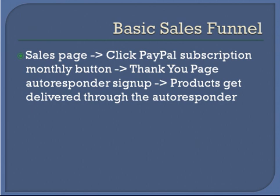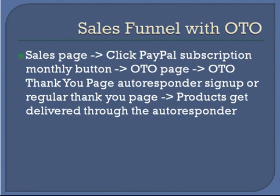Now, if you were to get a little more complicated and add a sales funnel with a one-time offer, then it would look like this: you have a sales page, they click the PayPal button, and then after that they see a one-time offer. If they purchase it, they get sent to the one-time offer thank you page with the autoresponder. Or if they say no, then they're sent to the regular thank you page. After that, the products get delivered through the autoresponder. Adding a one-time offer does make it a little more complicated, but it's really not that bad. In this specific video series, I'm going to talk about the sales funnel in relation to a basic sales funnel with no one-time offer, so that you can put all the pieces together and know exactly what you need to do.